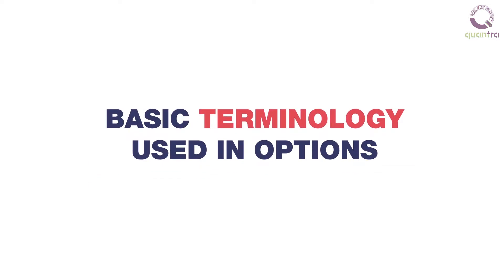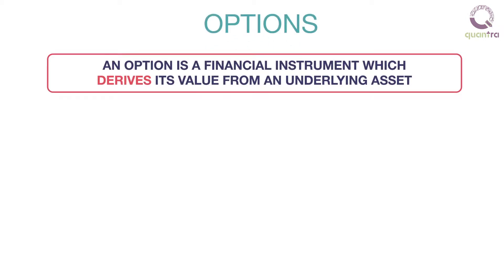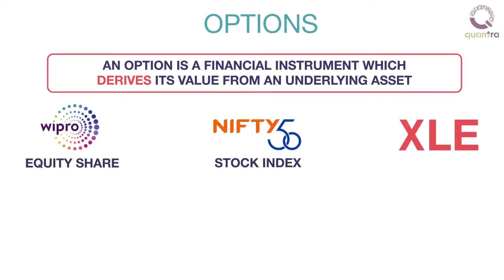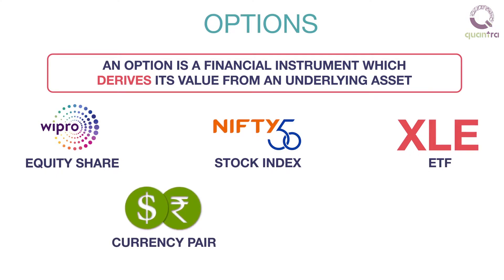In this video, we will discuss the basic terminology used in options. Let us start with the definition of an option. An option is a financial instrument which derives its value from an underlying asset. The underlying asset can be an equity share, stock index, exchange traded fund (ETF), currency pair, commodities, etc.